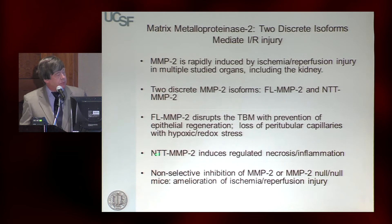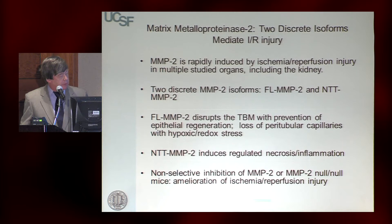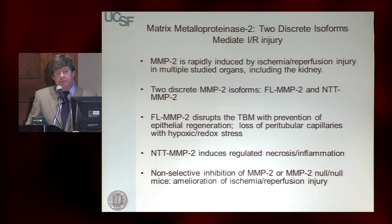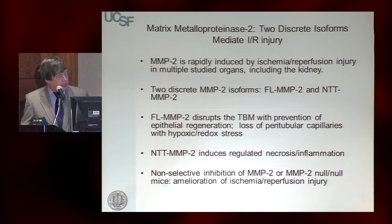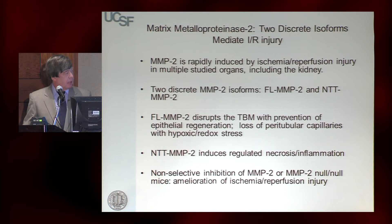This new isoform triggers regulated necrosis. We know from earlier studies that non-selective inhibition of MMP2, or the knockout mouse, results in lesser forms of ischemia reperfusion injury both in the heart and the kidney. I'll talk about where we are in terms of refining this as a target for prevention or possibly treatment of AKI.